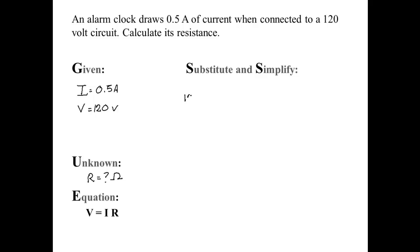Voltage equals 120. Current equals 0.5 times the resistance, which we don't know.